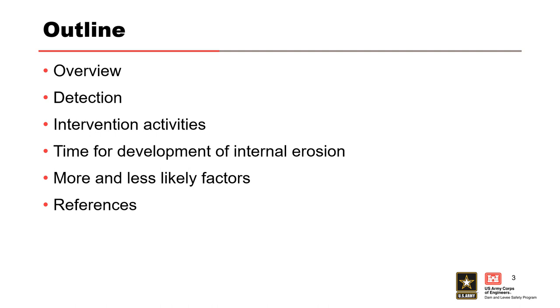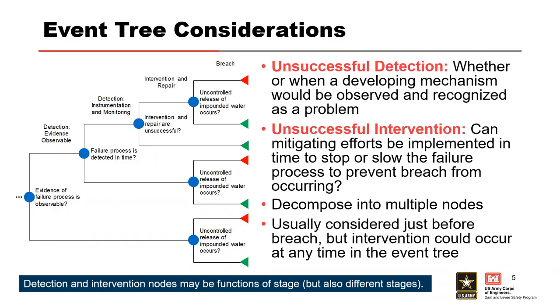For evaluation of this node of the event tree, unsuccessful detection or intervention leads to breach. A qualitative method of assessing the time for development of internal erosion will also be discussed, which influences the likelihood of successful detection, intervention, or repair. This node considers the likelihood that human efforts to detect and stop or slow the internal erosion process from breaching the event fail to work.